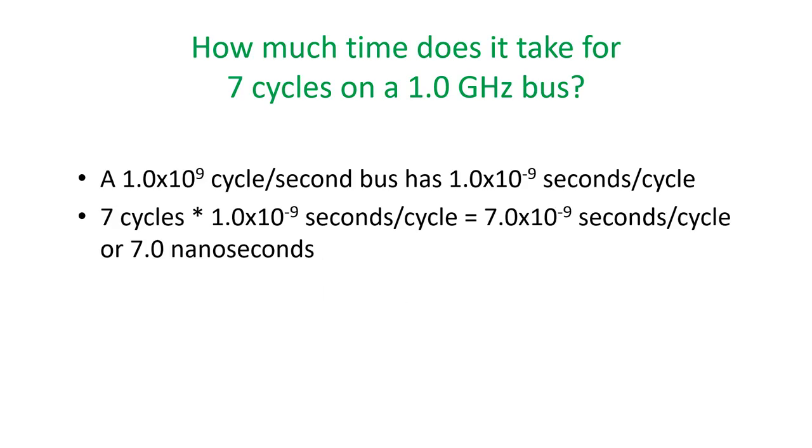With a 1 GHz bus, we can find seconds per cycle by inverting 1 times 10 to the 9th, giving us 1 times 10 to the negative 9th seconds per cycle. It's good to remember that a 1 GHz bus has 1 nanosecond cycles. So if you have a faster bus, say 2 GHz, it would be half a nanosecond, or 500 MHz would be 2 nanoseconds per cycle. Since there are 1 nanosecond cycles, 7 of them is simply 7 nanoseconds.